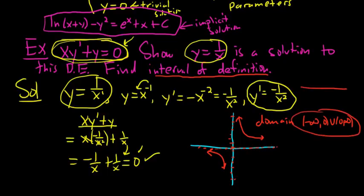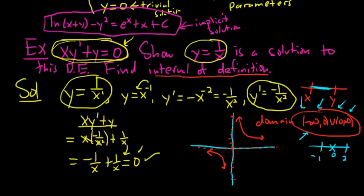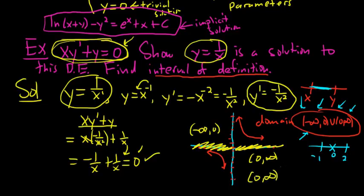By definition, an interval is a set where if you pick any two numbers in that set, every number between them is also in that set. This set fails that: if I pick −1 and 2, then 0 is not in the set. So it's not an interval. We can pick either (−∞, 0) or (0, ∞). I'll pick (0, ∞) as the interval of definition — you get to pick whichever you like.